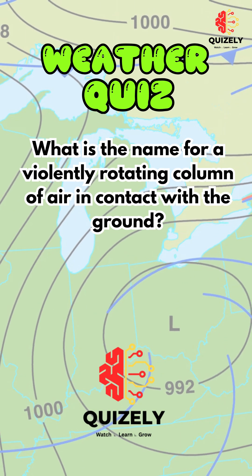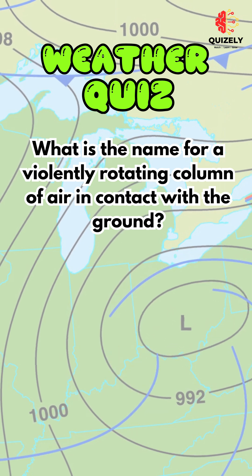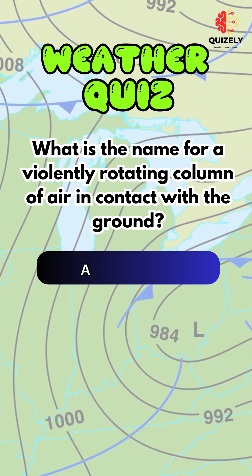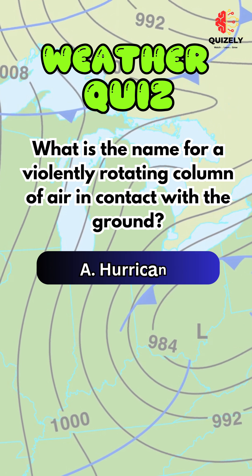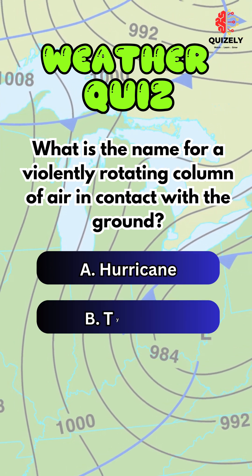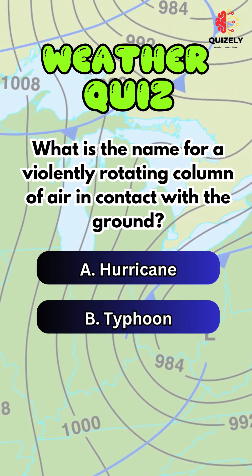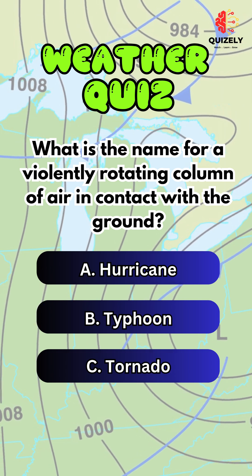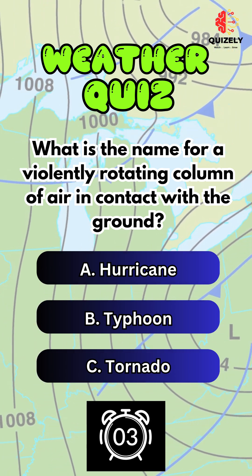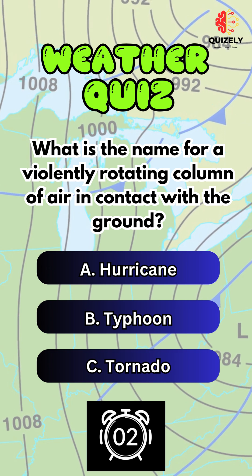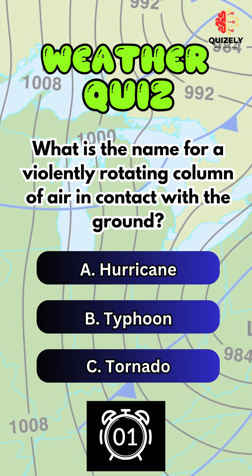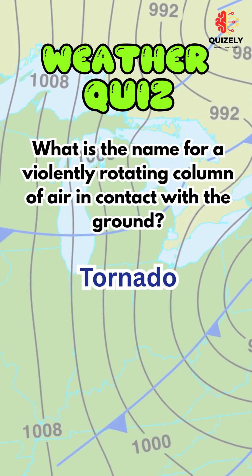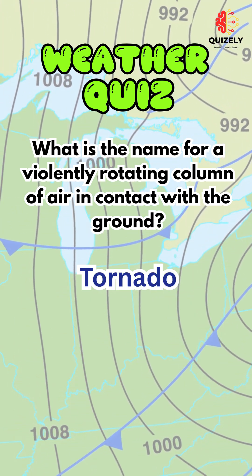What is the name for a violently rotating column of air in contact with the ground? A. Hurricane. B. Typhoon. C. Tornado. C. Tornado is the correct answer.